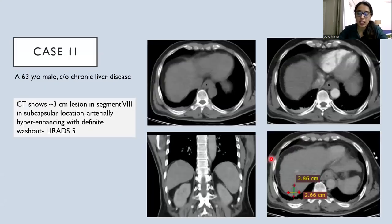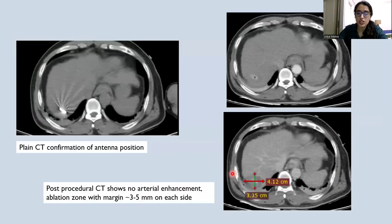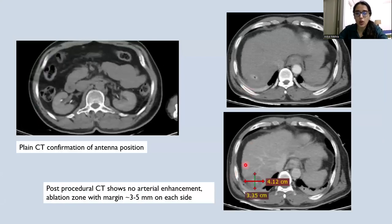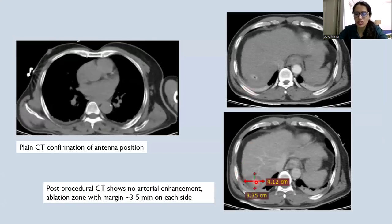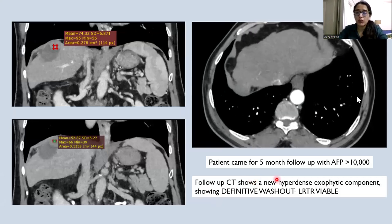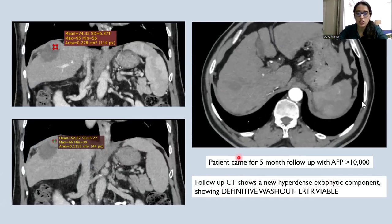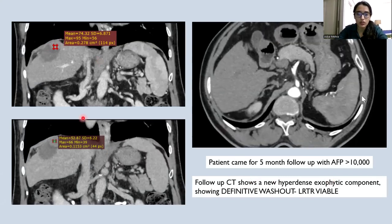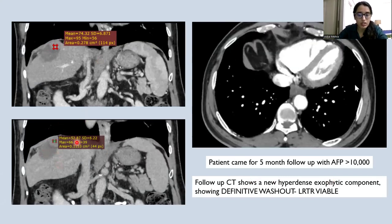Case 2 is a 63-year-old male with chronic liver disease. CT shows a near 3 cm lesion in segment 8 which is arterially hyper-enhancing with definite washout in the delayed phases. The post-procedural CT showed no enhancement; however, the margin in the ablation zone was only 3 to 5 mm. At the 5-month follow-up, the patient presented with AFP levels more than 10,000 and follow-up CT showed a new hyper-dense arterially enhancing component with definite washout in the delayed phases, confirming a viable tumor.